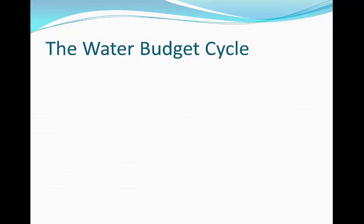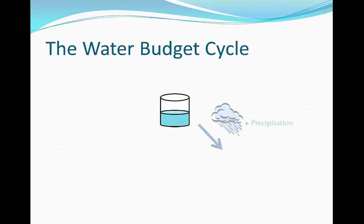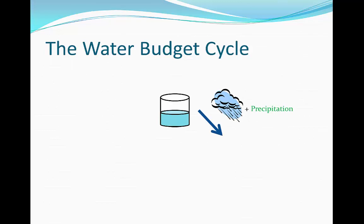Now we're going to look at the water budget cycle illustrated as a glass of water, showing how drainage basin water levels rise and fall over time. At the beginning of the year — let's say January — the first few months of January, February and March are colder with more precipitation. This causes the water level to rise and we have soil moisture surplus, so the pores — or in this case the glass of water — have higher levels of water inside them.